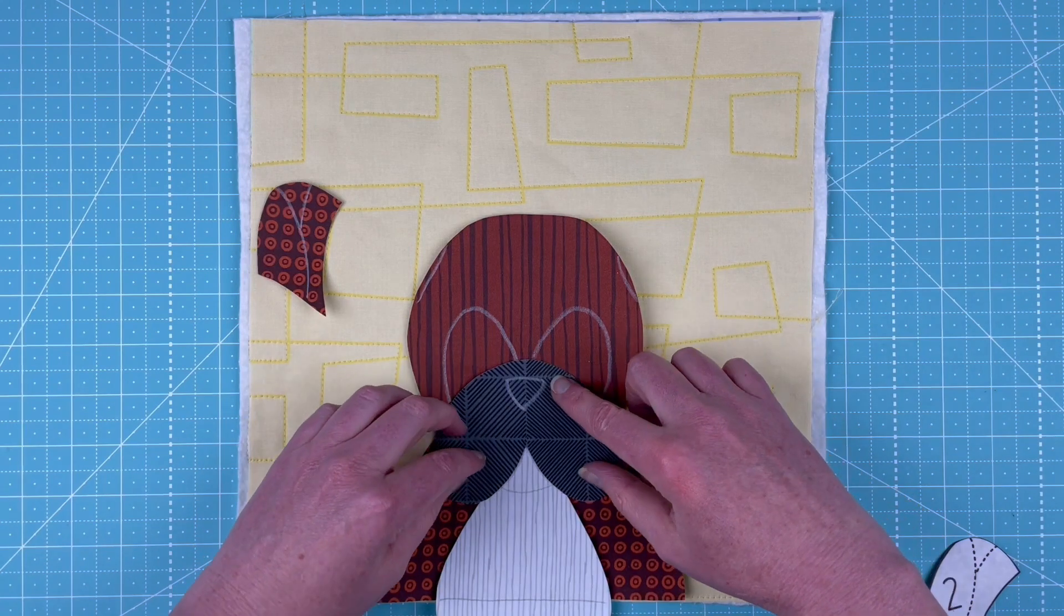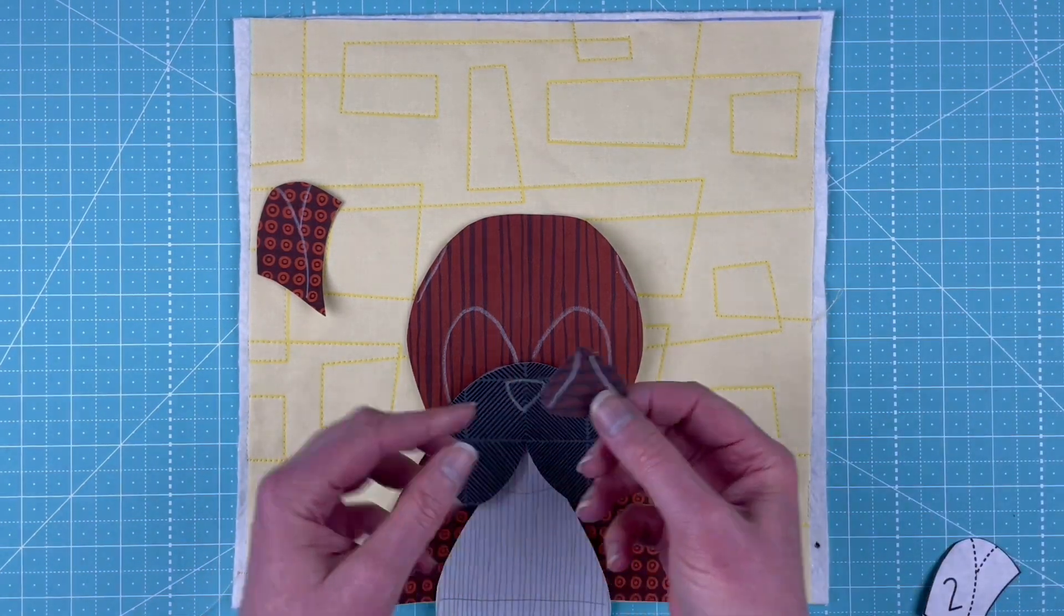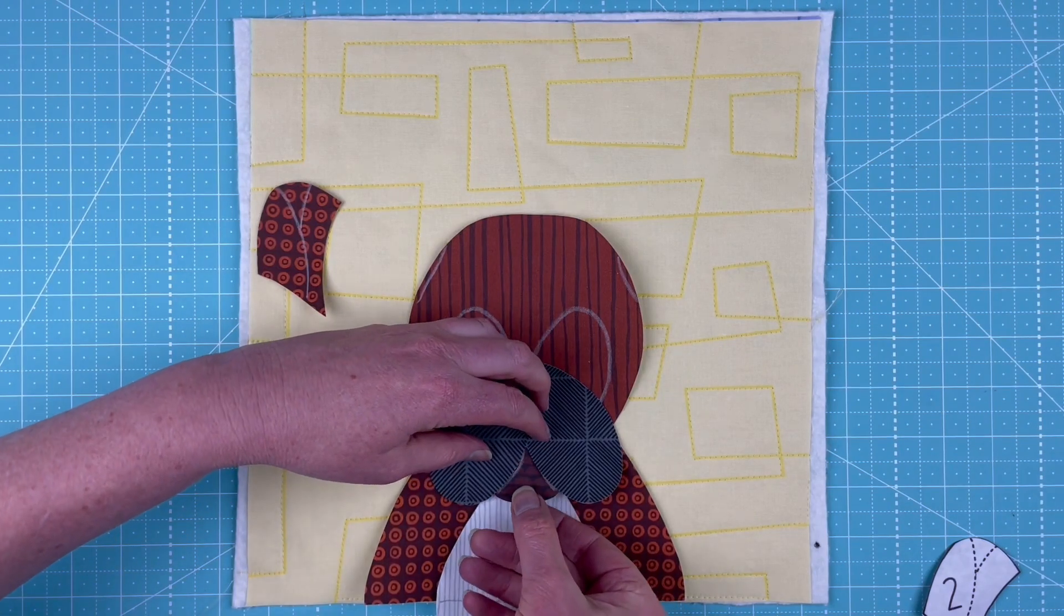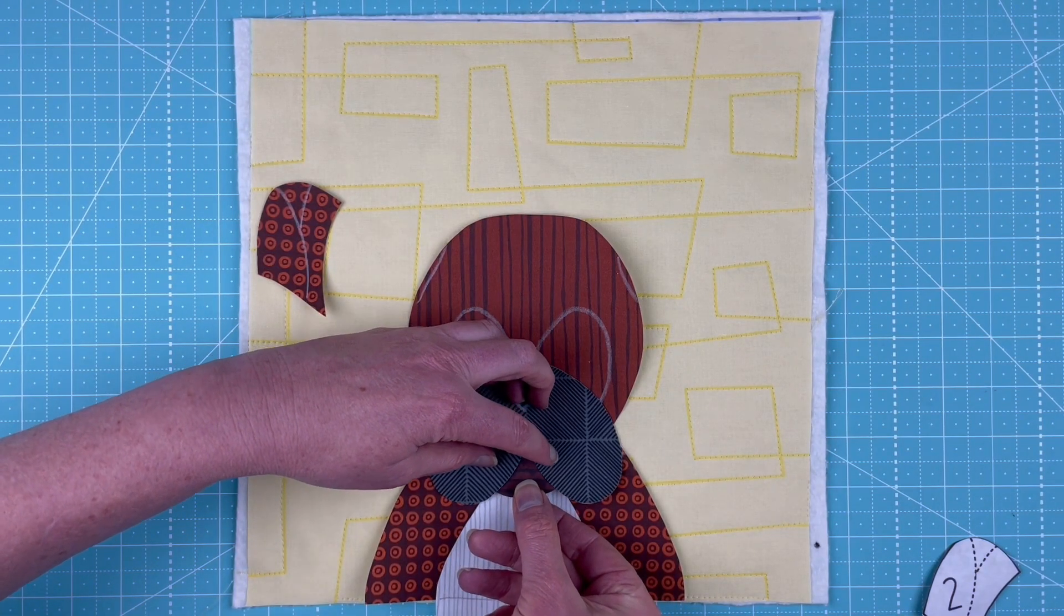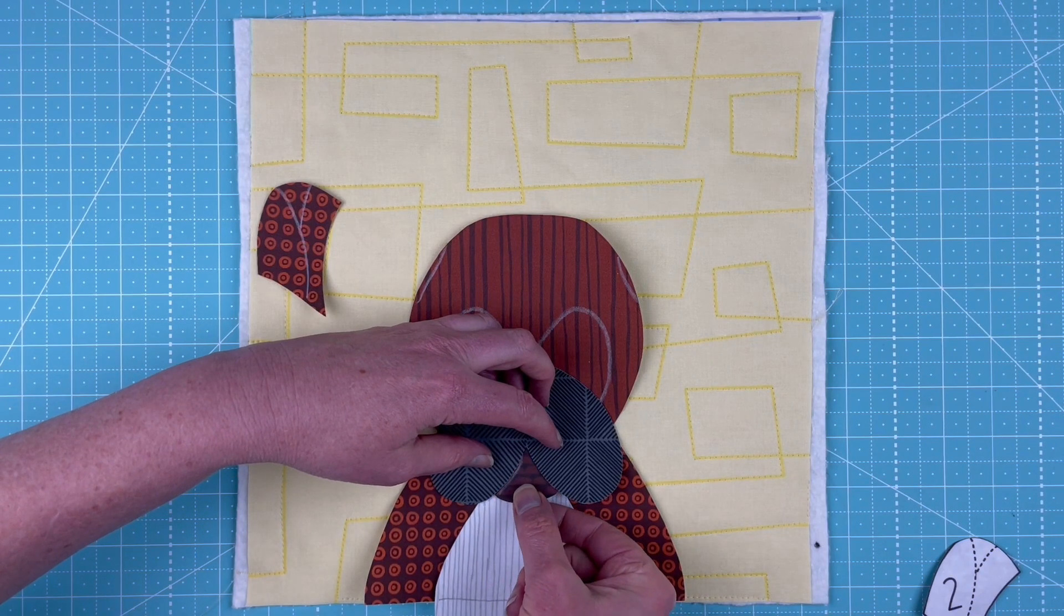Then I've got this odd little chin piece and I'm going to tuck that up underneath the muzzle and it's going to cover up that pencil line on his chest piece.